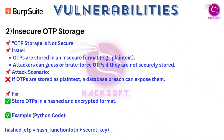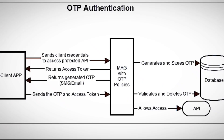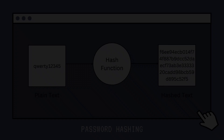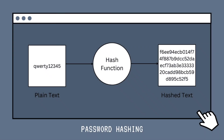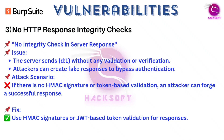The second vulnerability is insecure OTP storage. If OTPs are stored in an easily reversible format, an attacker could guess or brute force them. The fix: store OTPs hashed or encrypted — don't keep them in plain text. Next is no response integrity or token validation.